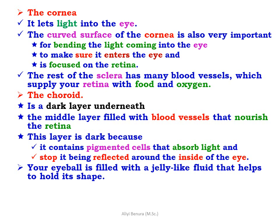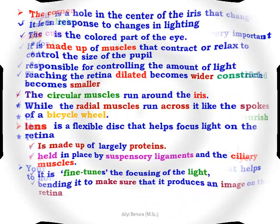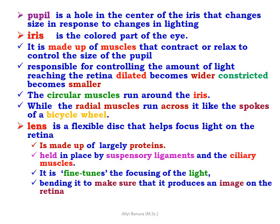Your eyeball is filled with a gel-like fluid that helps to hold its shape. The pupil is a hole in the center of the iris that changes size in response to changes in lighting. The iris is the colored part of the eye; it is made up of muscles that contract and relax to control the size of the pupil and the amount of light reaching the retina.